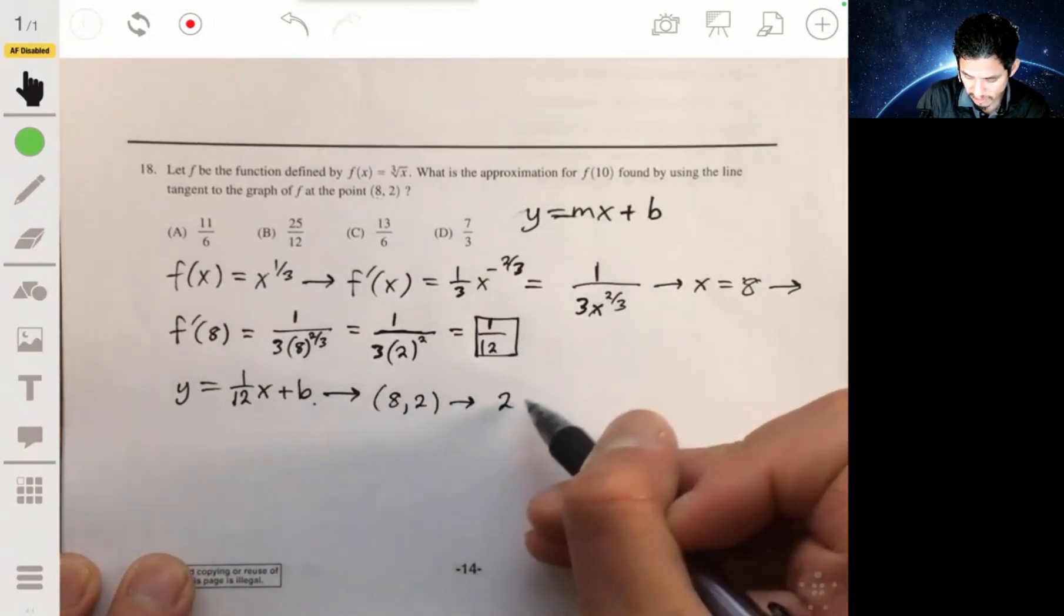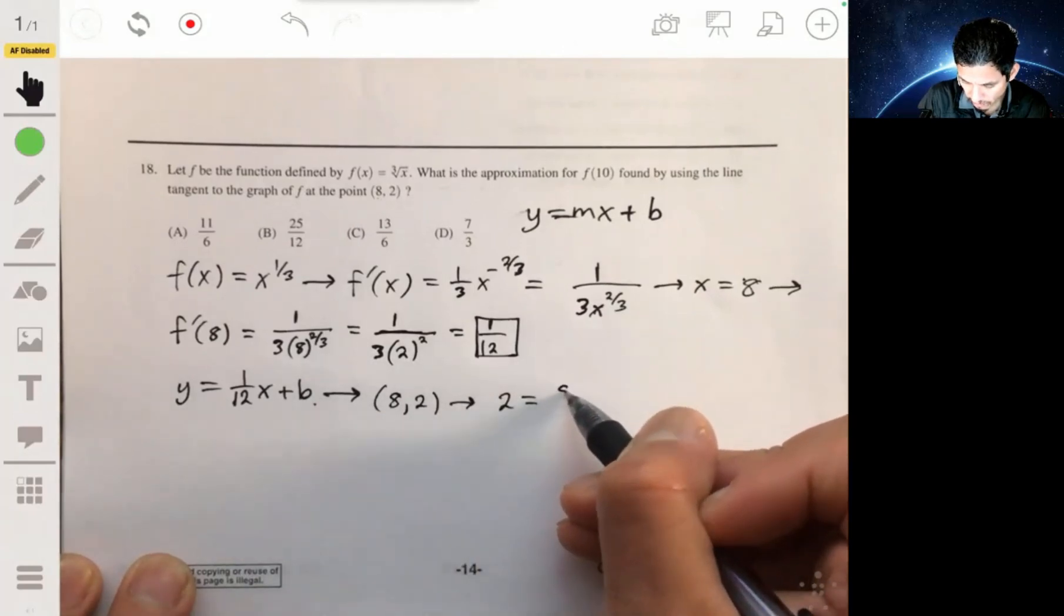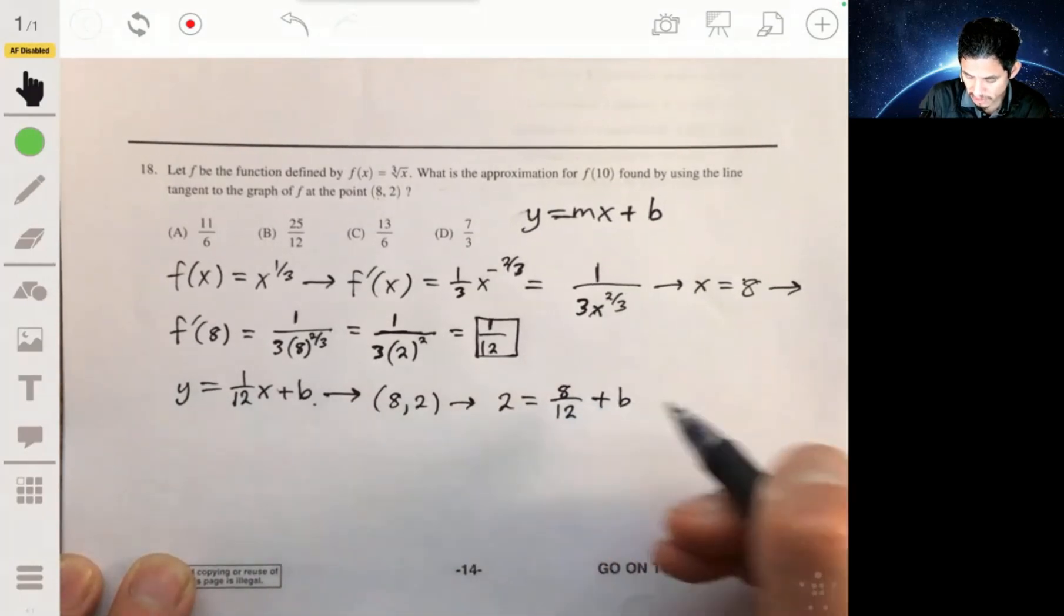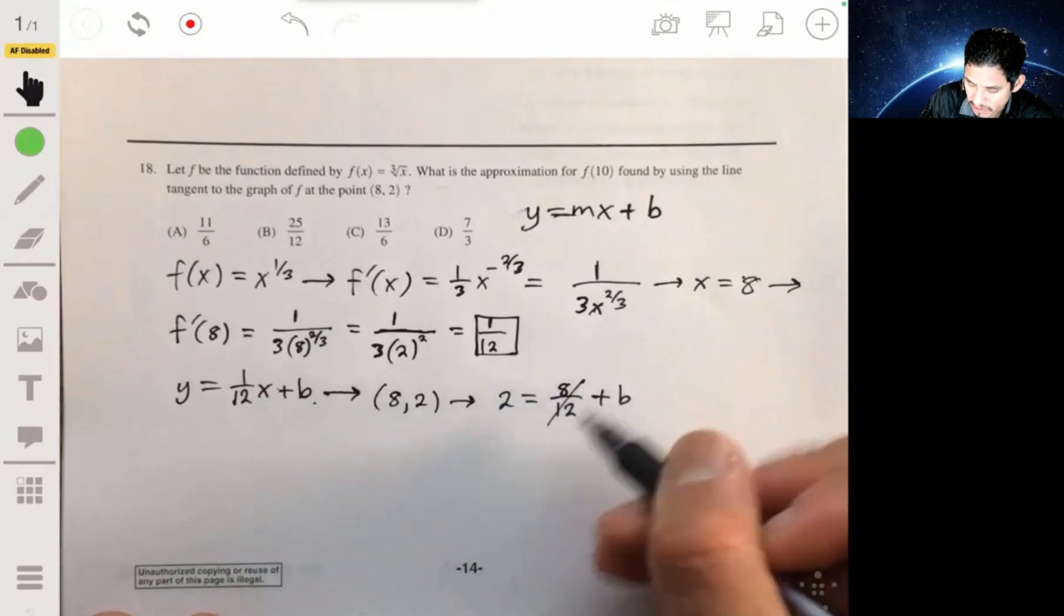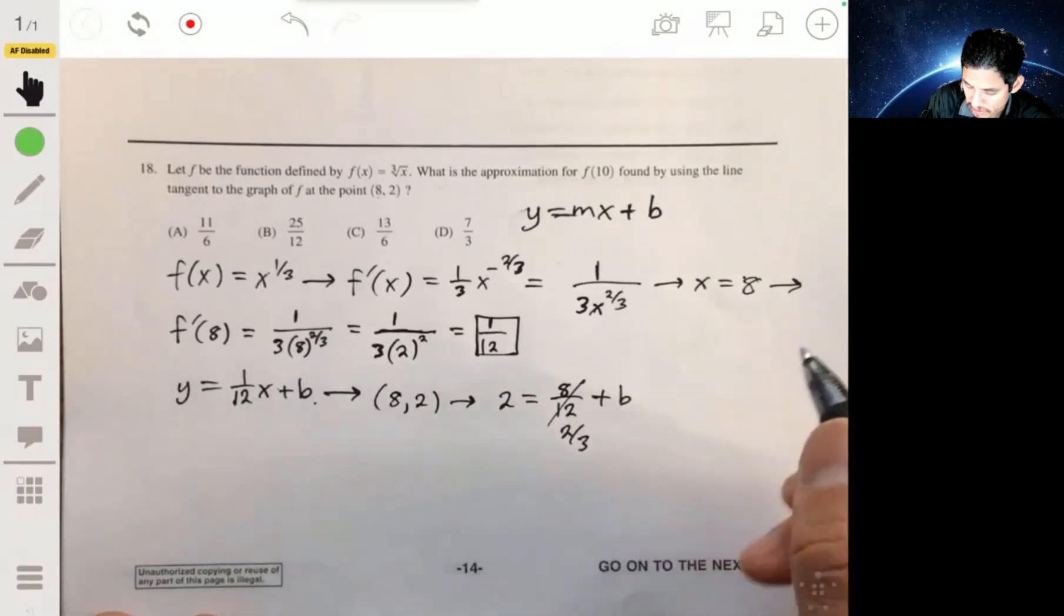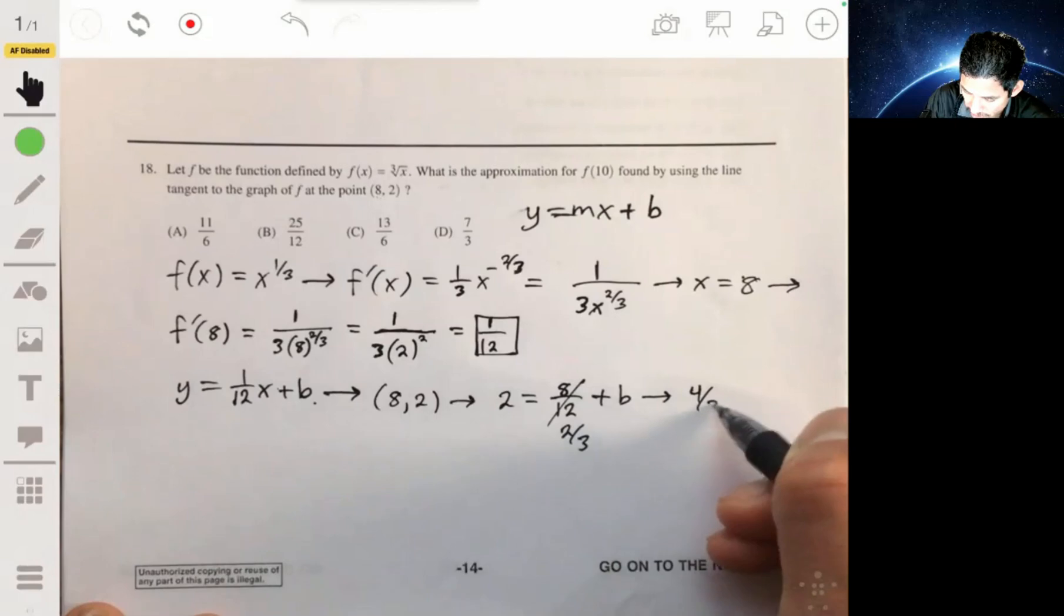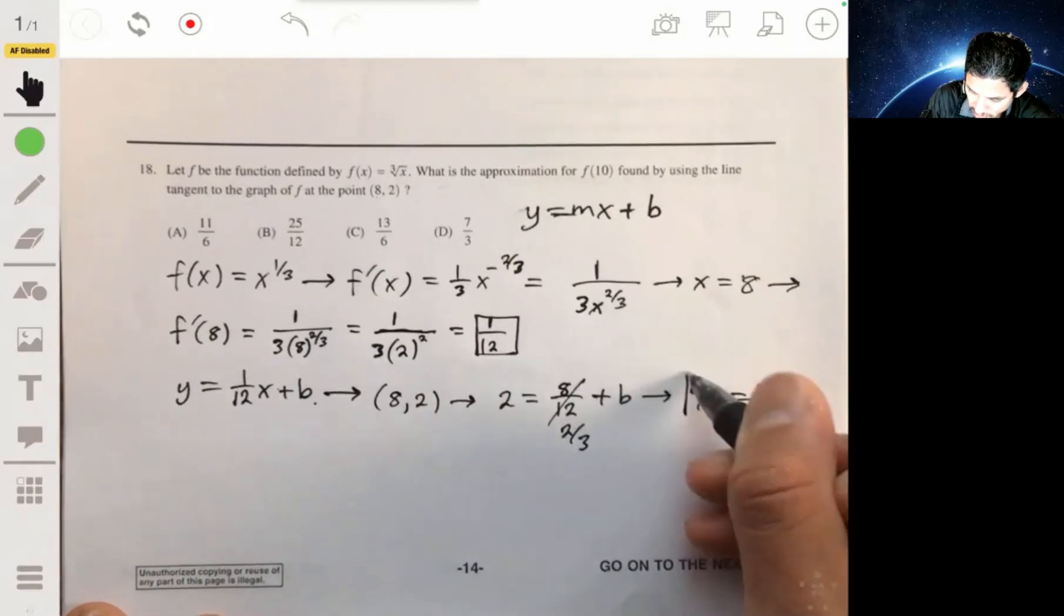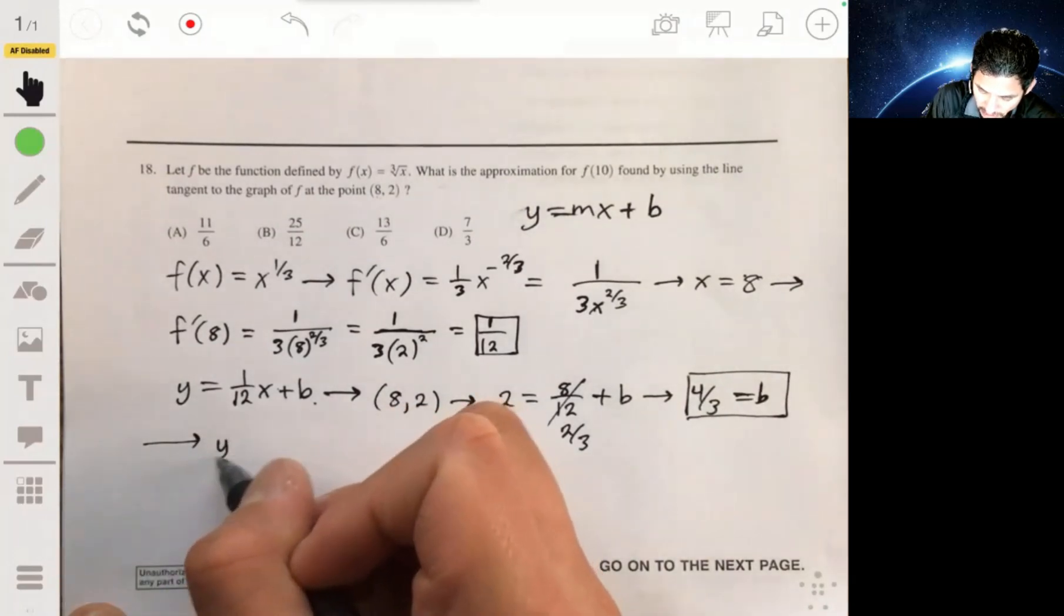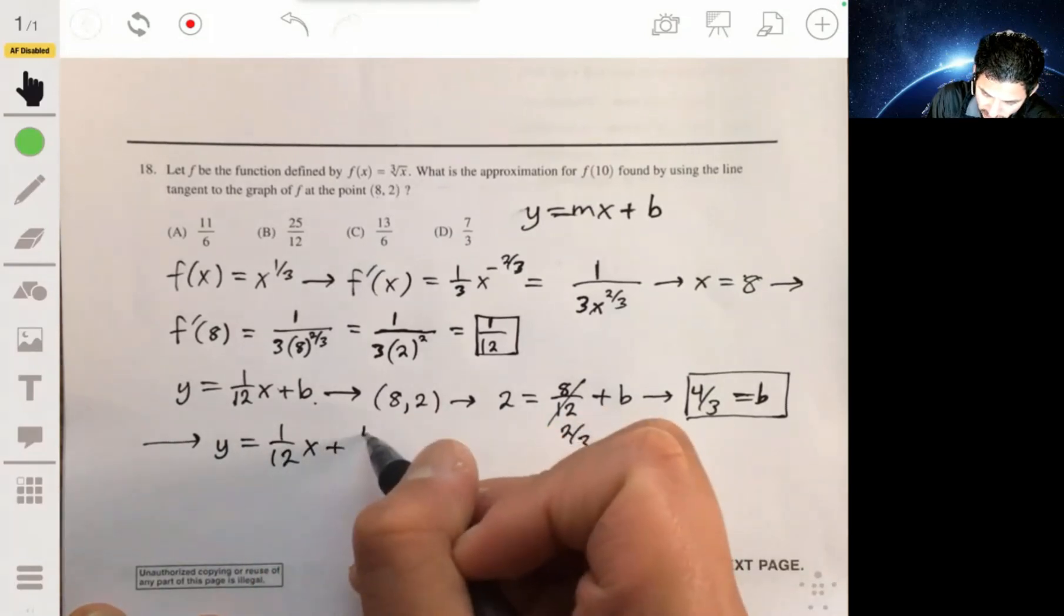So you have y is 1/12 x plus b. And you now find the y-intercept by just plugging this point in for x and y. So you get 2 equals 1/12 times 8 plus b. 8/12 is just 2/3, so 2 minus 2/3, and you get that b is 4/3. And so your equation will be y equals 1/12 x plus 4/3.